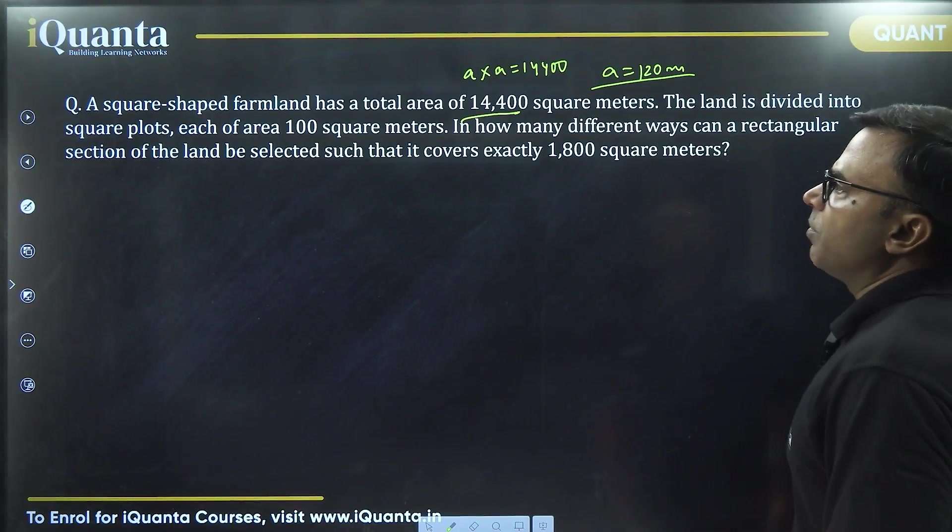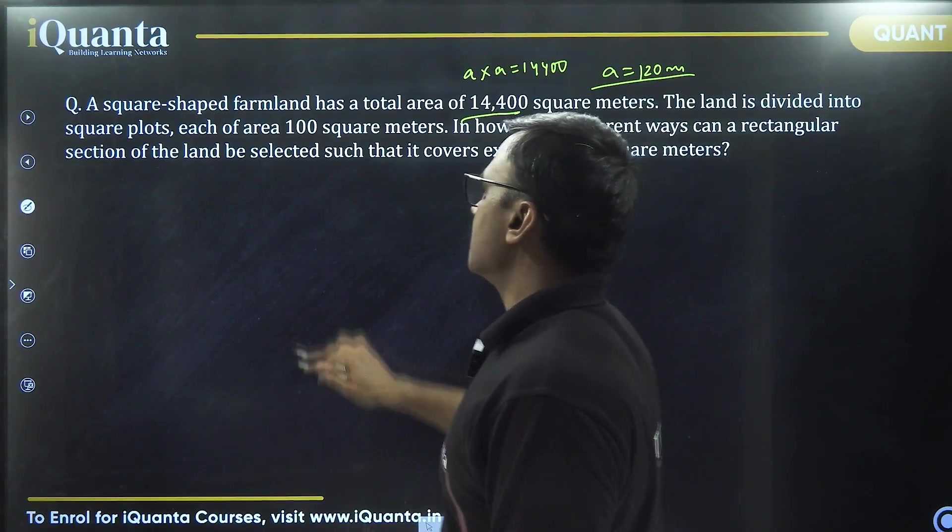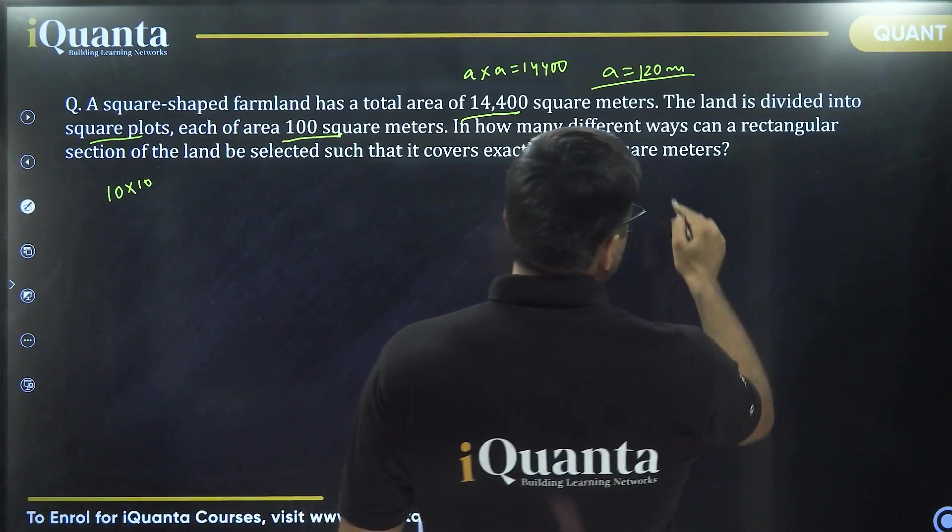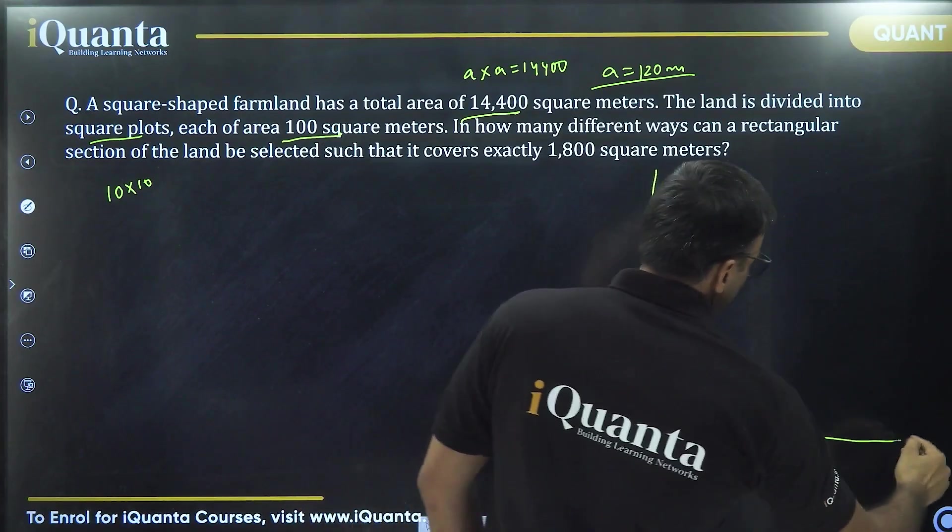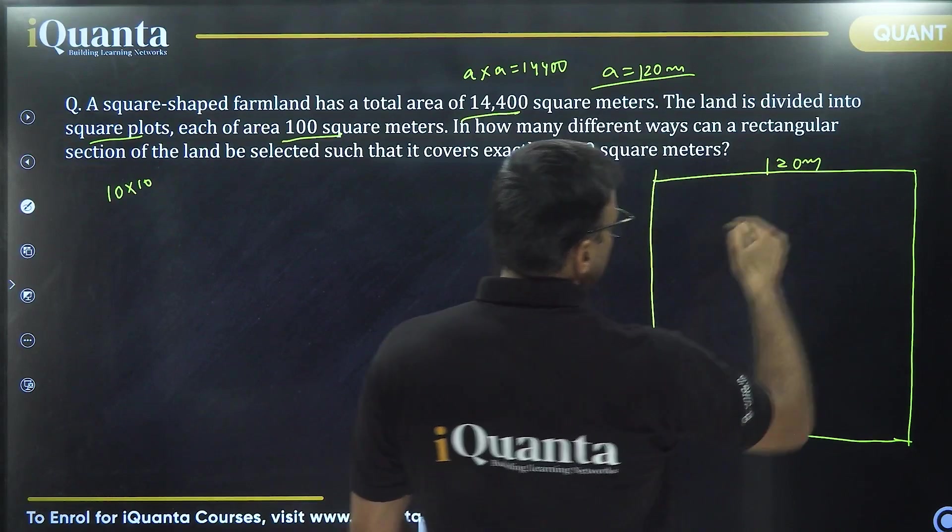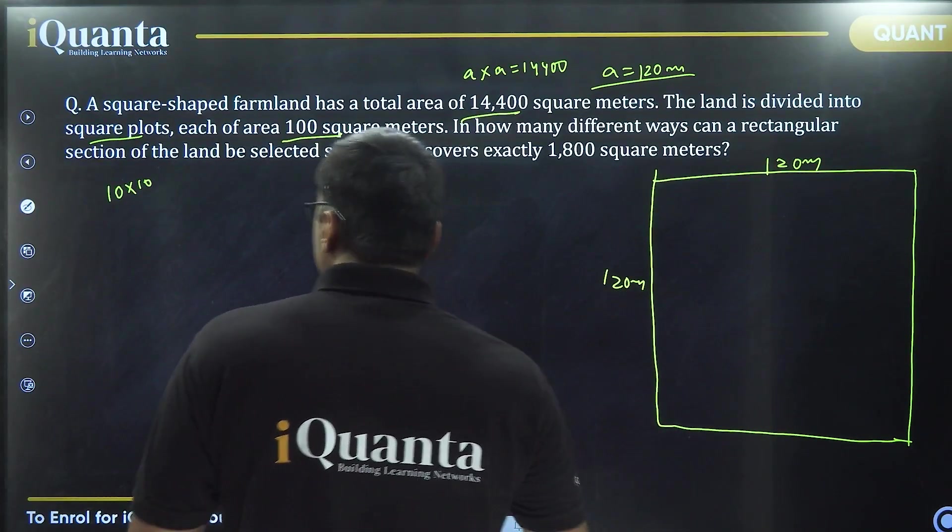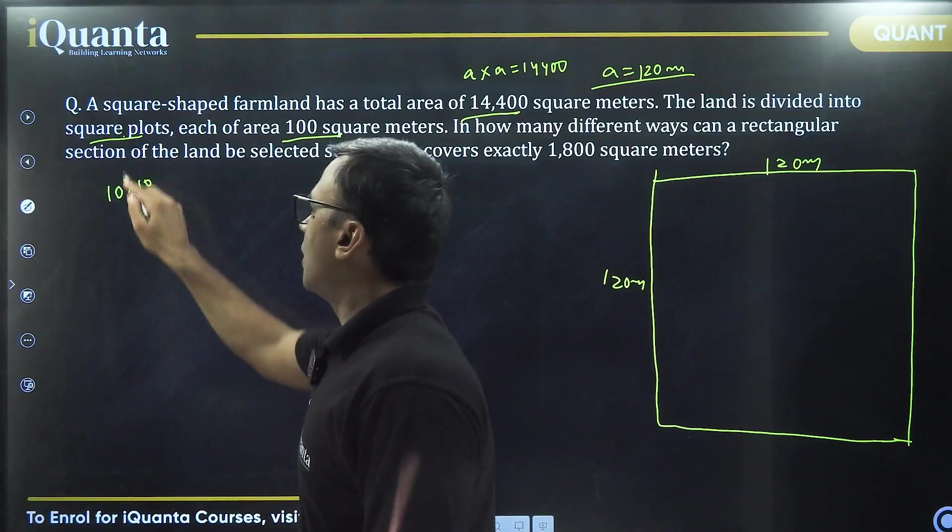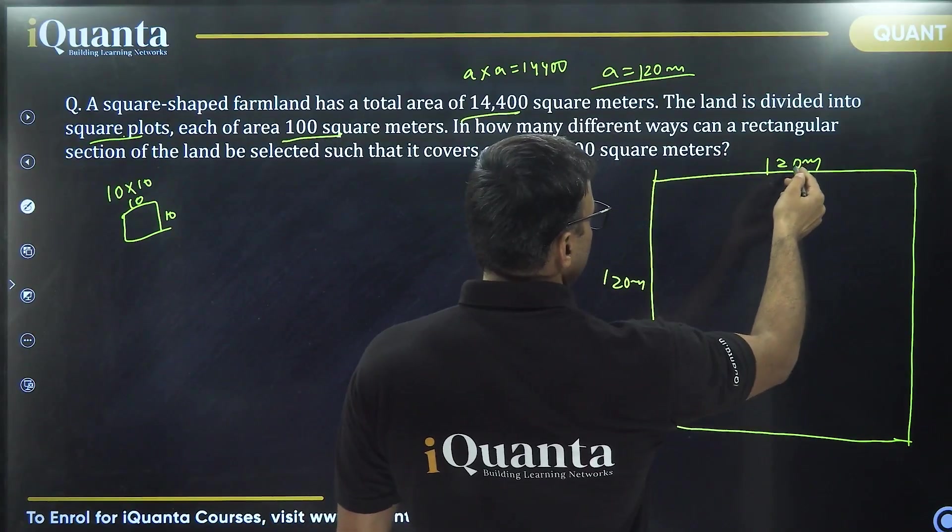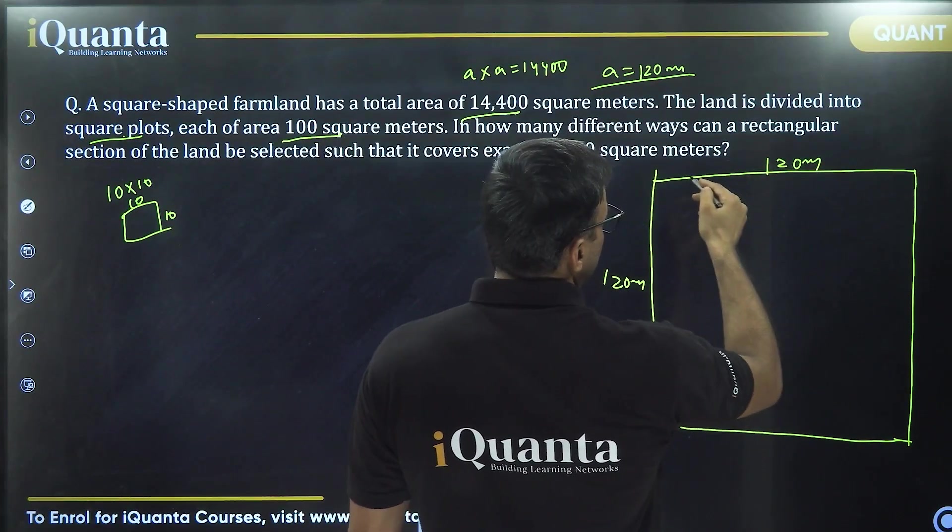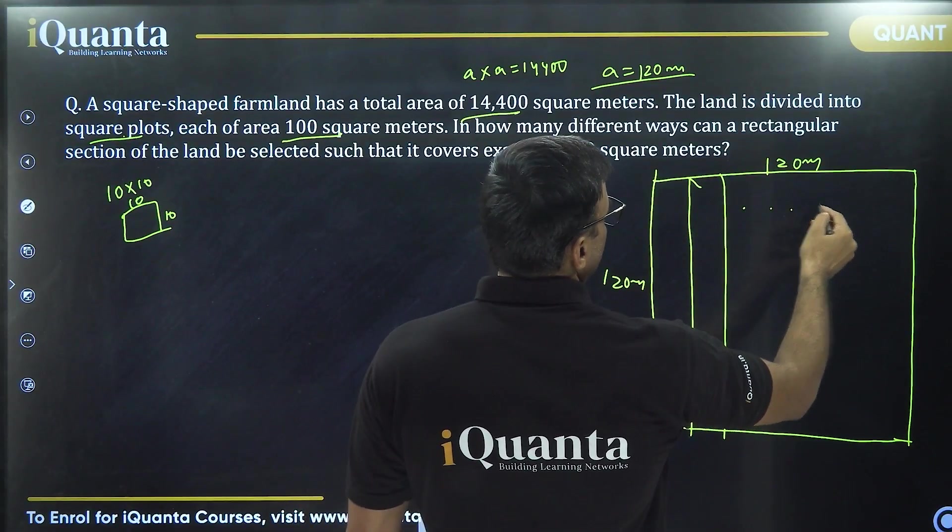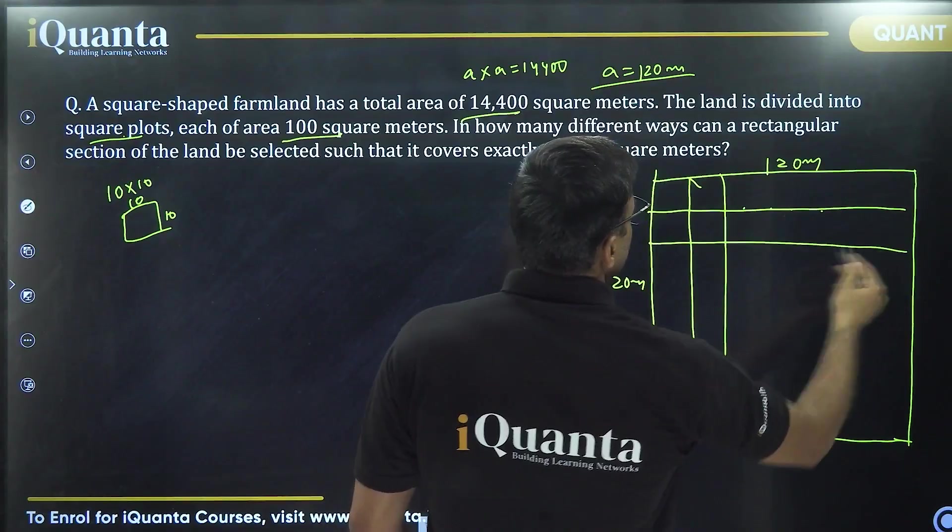The land is divided into square plots each of area 100 square meters. So again, square plot area 100. So that should be 10 into 10. That means the larger plot is length 120 meters width 120 meters, and the smaller plot is 10 by 10. If I divide 120 into 12 parts, you will get each part equal to 10 meters. Similarly, this side also 12 parts.